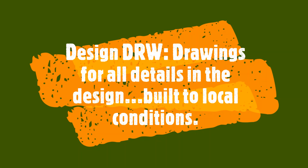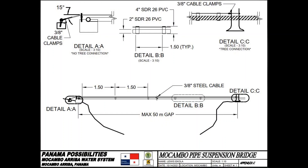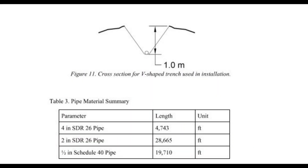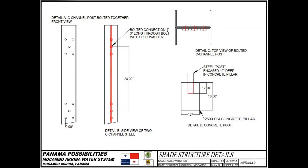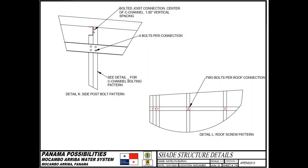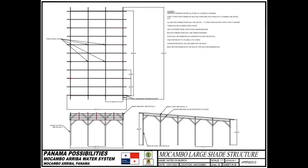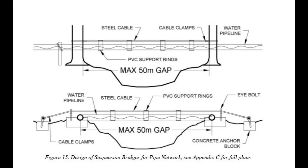Changes will be made. No design is complete without drawings. Drawings for all details are in this document. It will be built to local conditions, but without the drawings, we have no starting point for any of the details. Details for everything are included: how to assemble the overhead sun shade for the tanks, how to construct crossings for pipe bridges, the required cross section for excavation trenches, and how to cover pipe that's exposed on the ground. Every detail is provided.